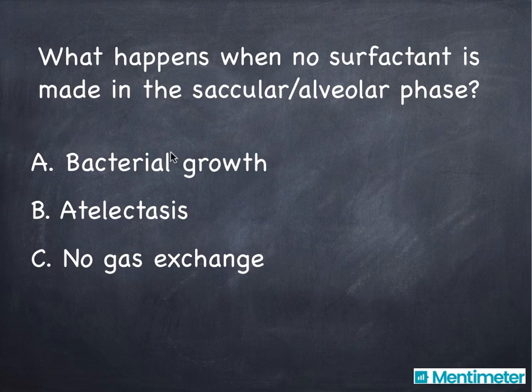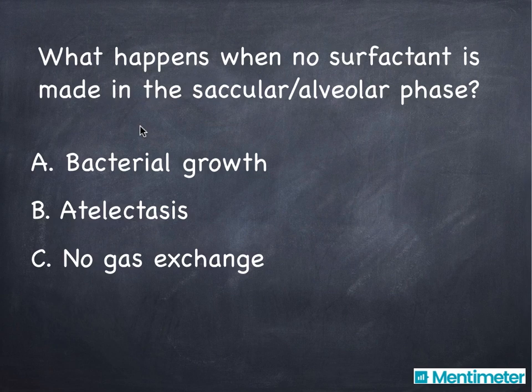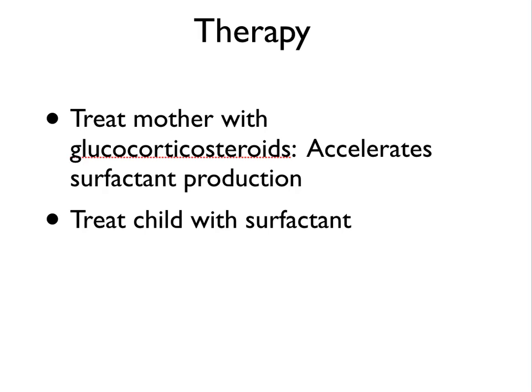What do we call the phenomenon when there's no surfactant made in the saccular and alveolar phase? The problem is that the lung collapses — atelectasis. If you're born with a defect in surfactant production, then of course you can be treated with surfactant.